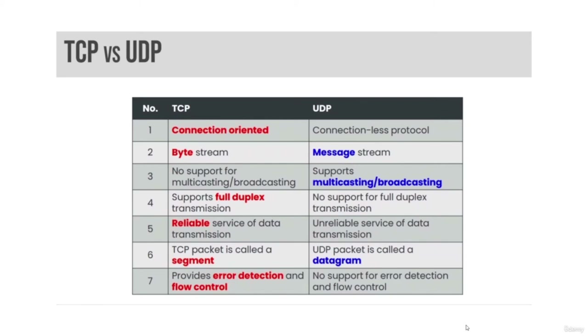TCP is a reliable Layer 4 protocol. TCP uses a three-way handshake to create reliable connections across the network. TCP can also reorder segments that arrive out of order and retransmit missing segments.